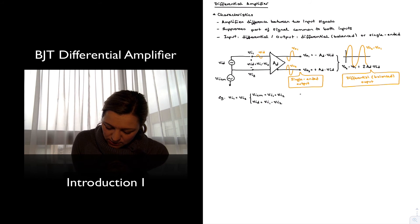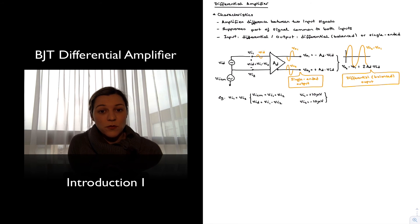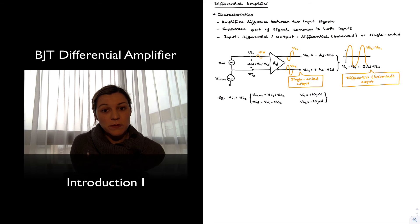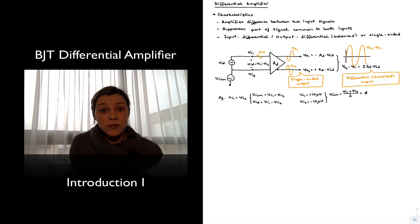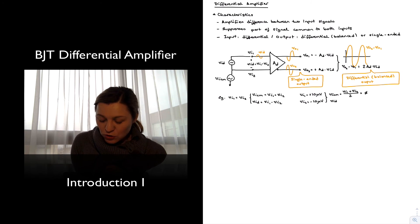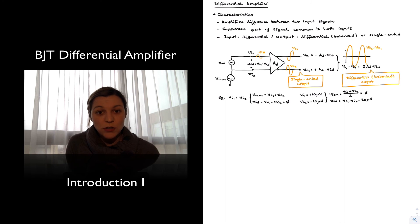Let's look at another example. Let's imagine that VIN1 is equal to 10 microvolts and VIN2 is equal to negative 10 microvolts. In this case, the common mode portion of the signal is the average of the two input signals — VIN1 plus VIN2 divided by 2 — which is equal to 0. So VICM equals 0 and the signal is completely differential. The differential signal will be VIN1 minus VIN2, which is 20 microvolts. So these are two extreme cases: one where the differential signal was 0, and another where the common mode signal was 0 and all of the signal was differential.